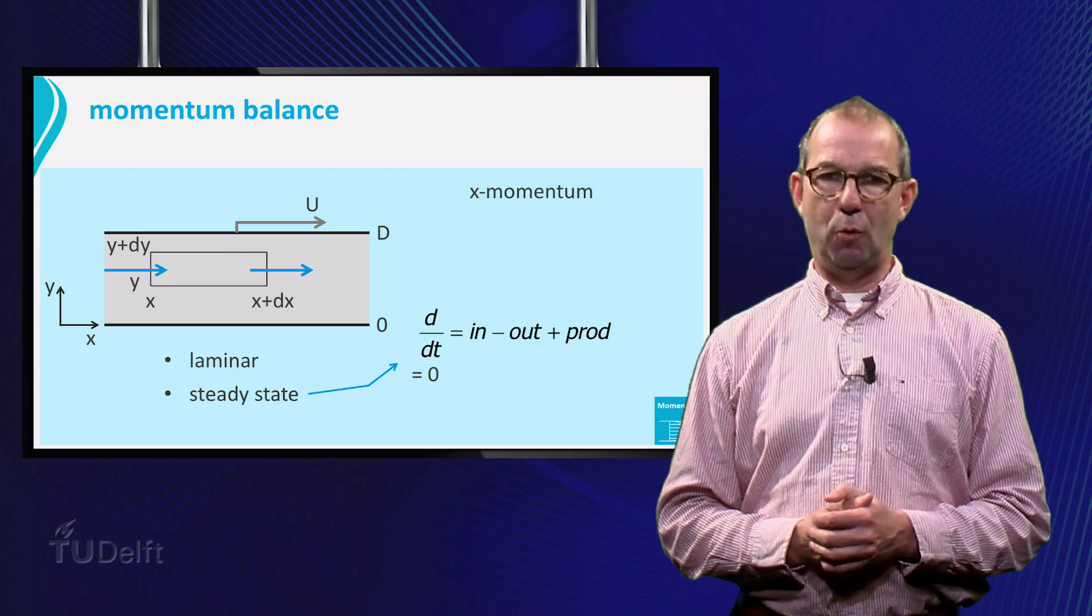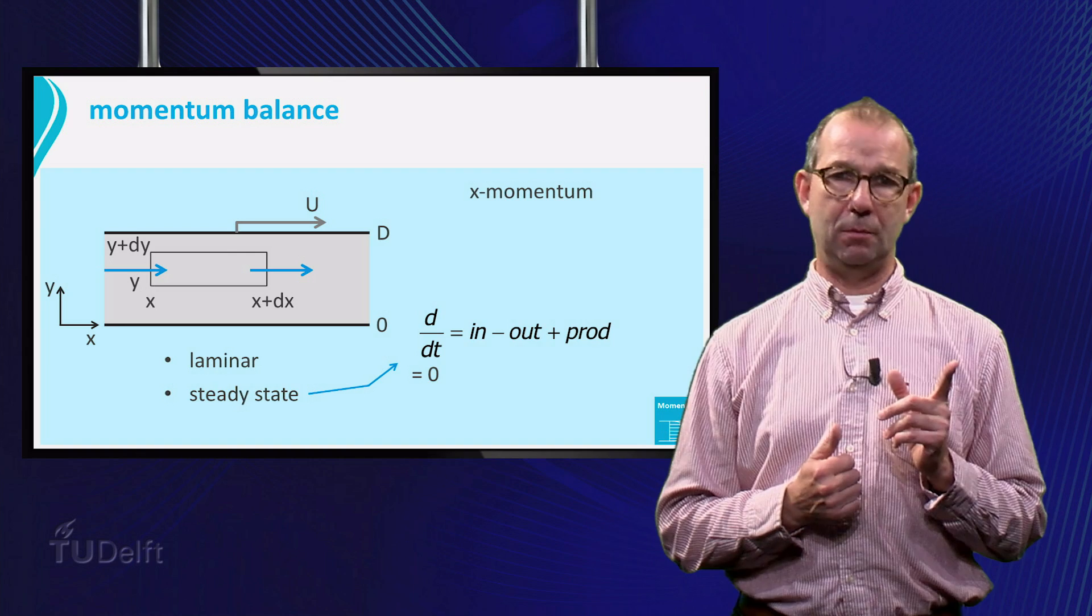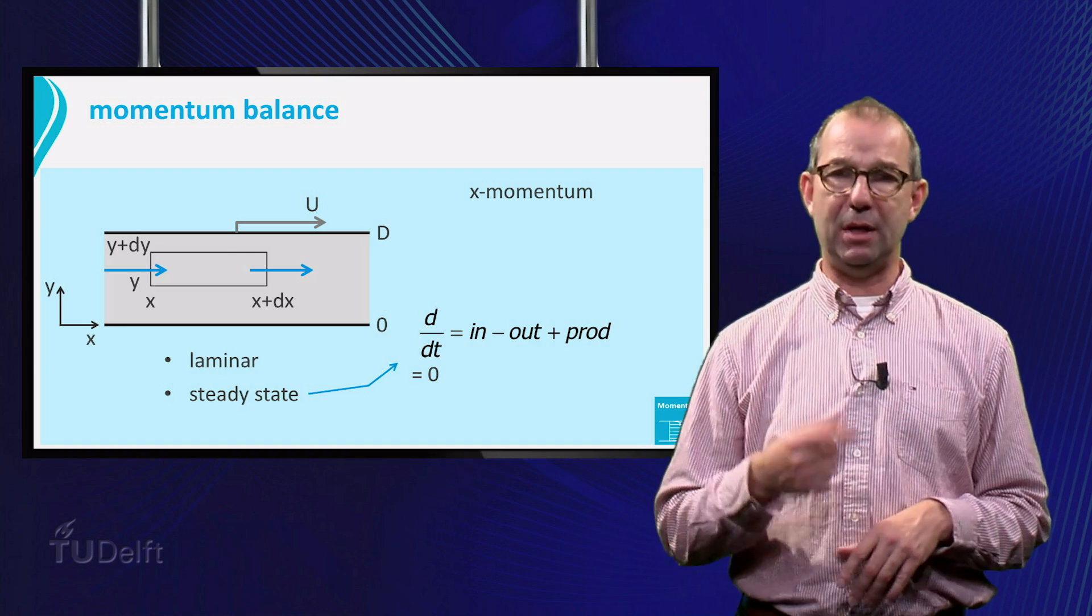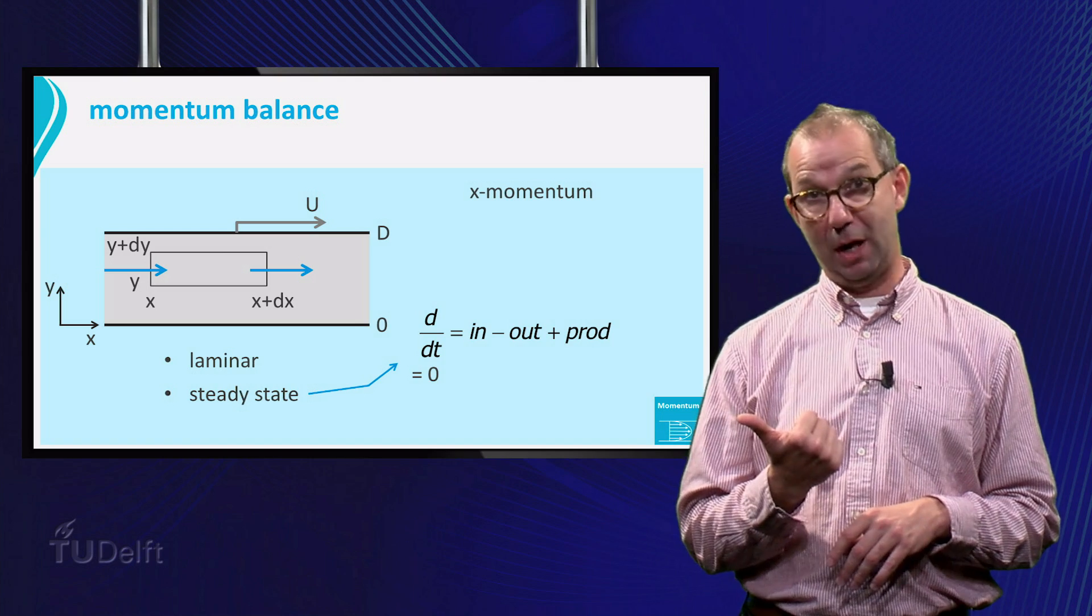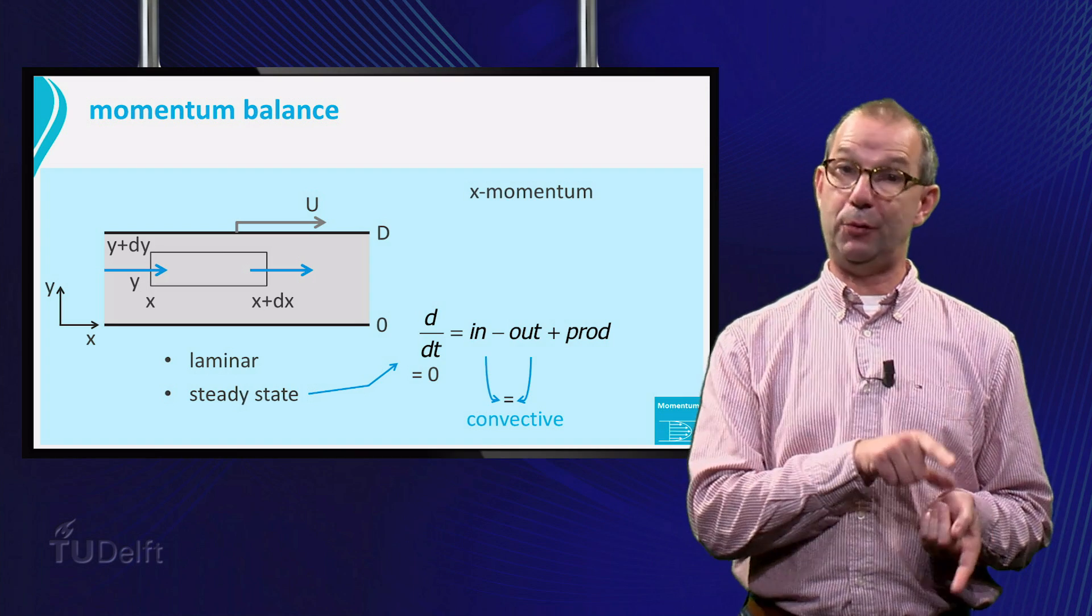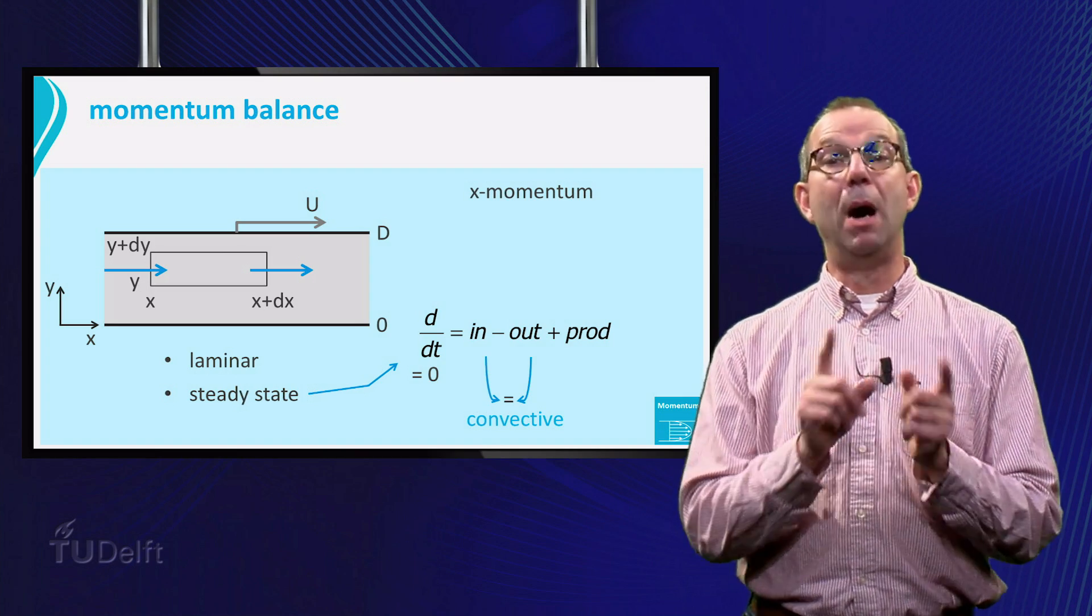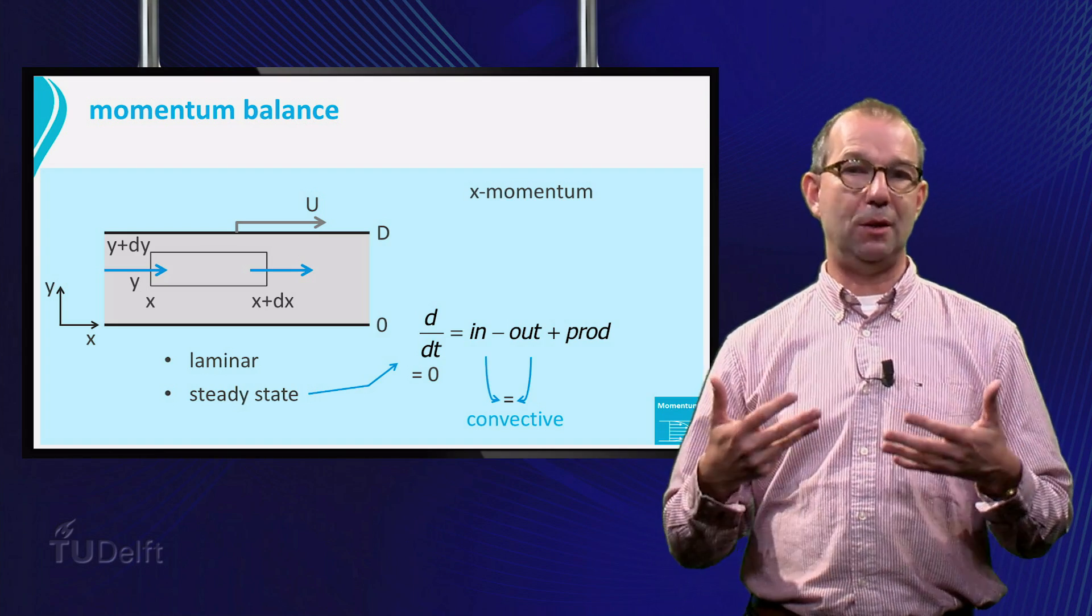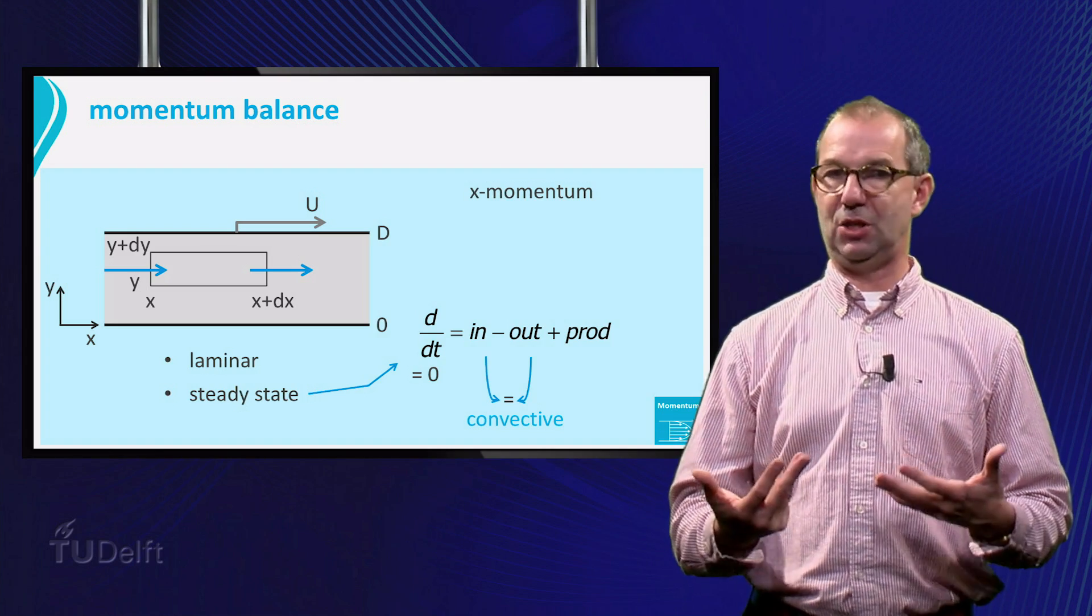We have inflow of momentum from the left, the blue arrow at position x, similarly we have outflow at the right. These two flows cancel each other, as what flows in from the left must flow out at the right according to a mass balance. Convective flow can only happen in the x-direction in this case.